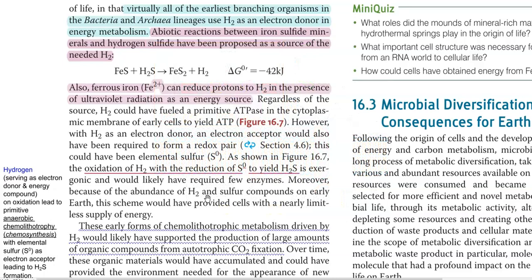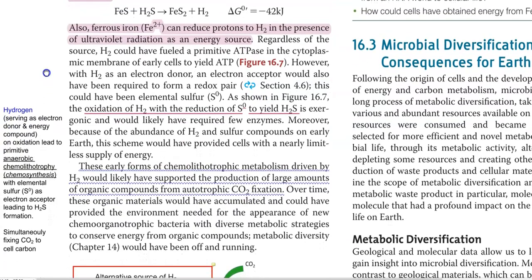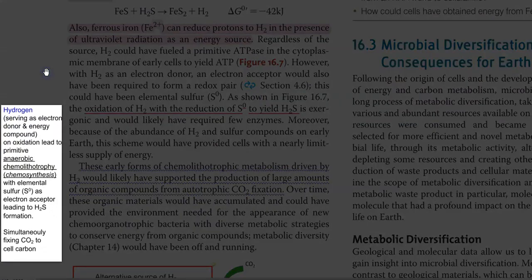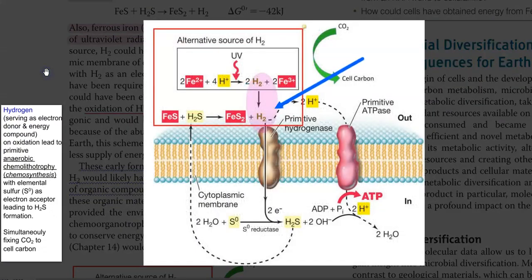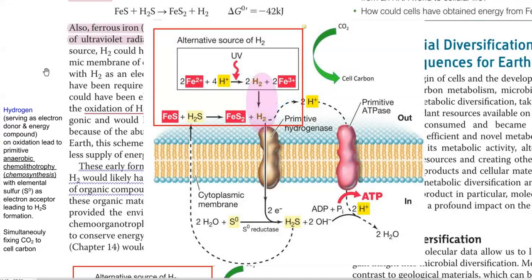So, these processes can bring out a lot of hydrogen in the early earth system, by which hydrogen may have served as an electron donor as well as an energy source for the earliest known chemolithotrophic organisms. Thus, the earliest known chemolithotrophic process is an anaerobic chemolithotrophy — that is a chemosynthesis process — in which elemental sulfur acts as the electron acceptor, leading to the formation of hydrogen sulfide.